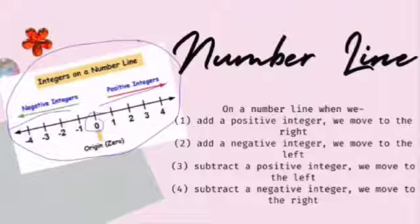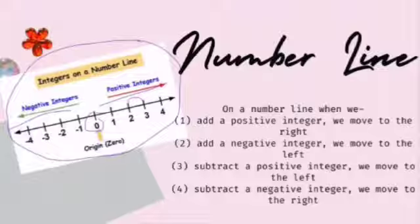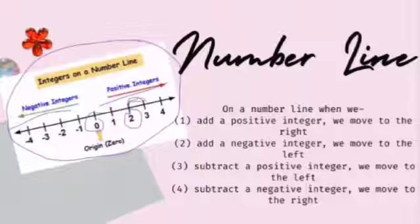So let's follow what it says. Add a positive integer — we move to the right. For example, if I want to add one to two, it will be three, so I move to the right. Here is my point two and I move to the right. Since two is a positive number, that's why I moved right.